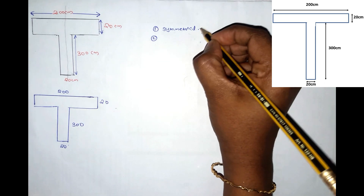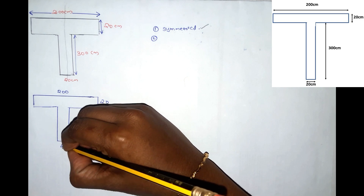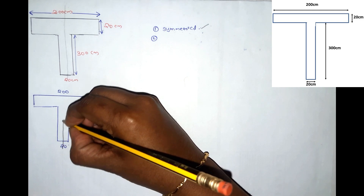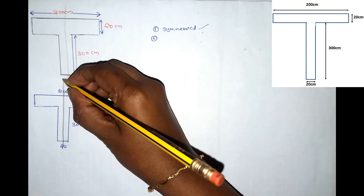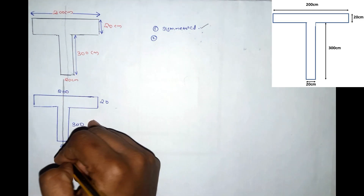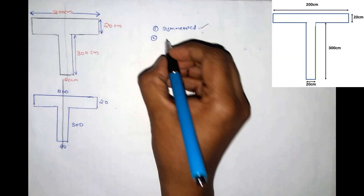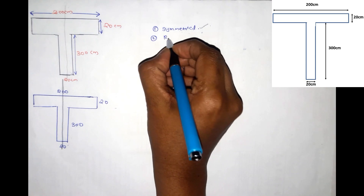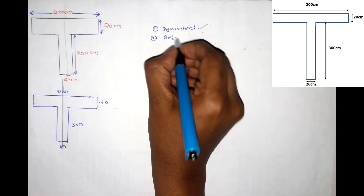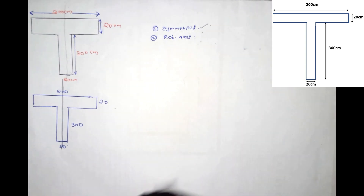This is our first step — I will mark it here too. This axis is symmetrical. That is the first step. The second step is we mark the reference axis. That is our second step.